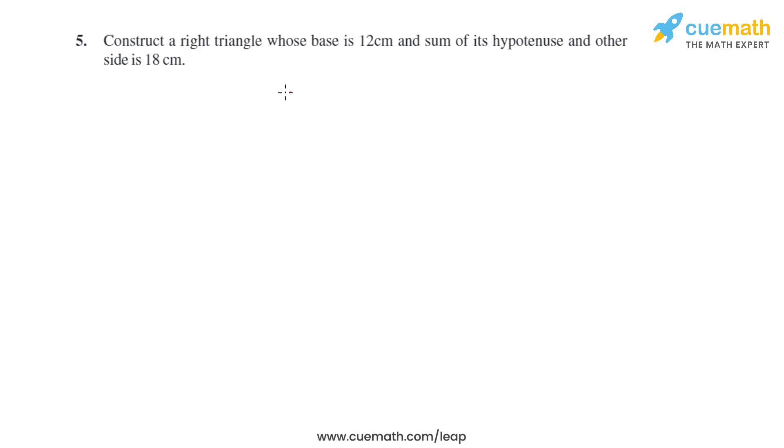Question 5 of this exercise says construct a right triangle whose base is 12 centimeter and sum of its hypotenuse and other side is 18 centimeter. Now let's start with the steps of construction. In the first step we need to draw a base BC equal 12 centimeter.